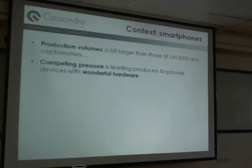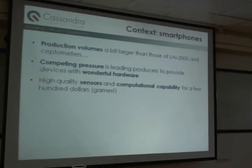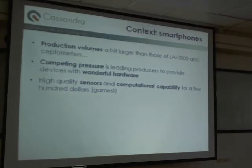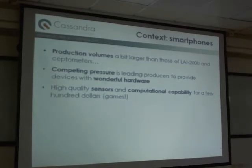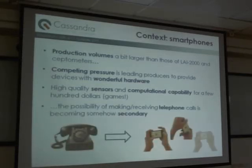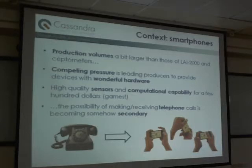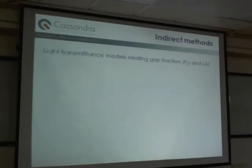Whereas smartphones — the production volumes of smartphones are surely just a bit larger than those of the septometers and the LAI-1000. The competing pressure among producers is leading them to introduce wonderful hardware into the devices: high-quality sensors and computational capability for a few hundred dollars. This is because of games and other recreational activities — everybody is buying these devices for games, Facebook, and so on. But this makes the price go down, and so we can get, for really a few hundred dollars, small computers and sensors. This is the way Marco is using the smartphone — the possibility of making a phone call is becoming, somehow, secondary.